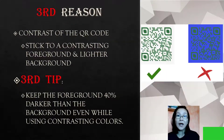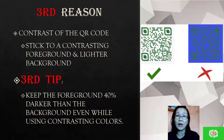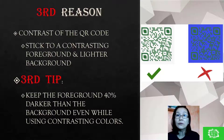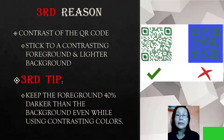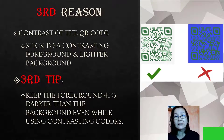The third reason is the contrast of the QR code. That means to stick to a contrasting foreground and a lighter background. The third tip is to keep the foreground 40% darker than the background, even while using contrasting colours.